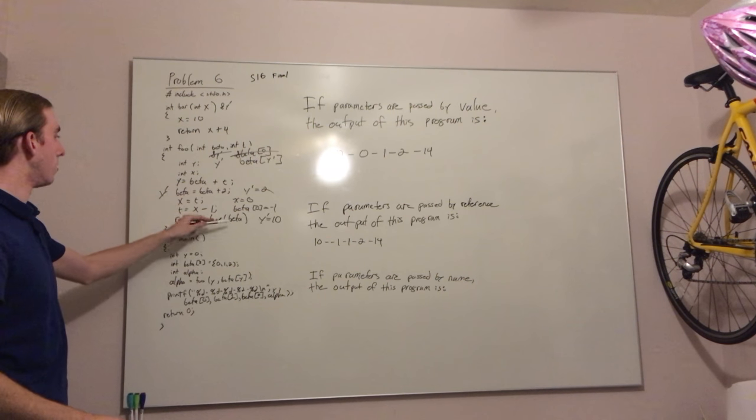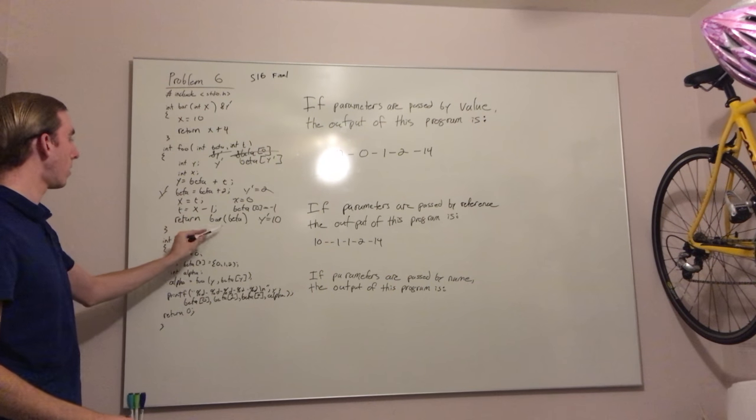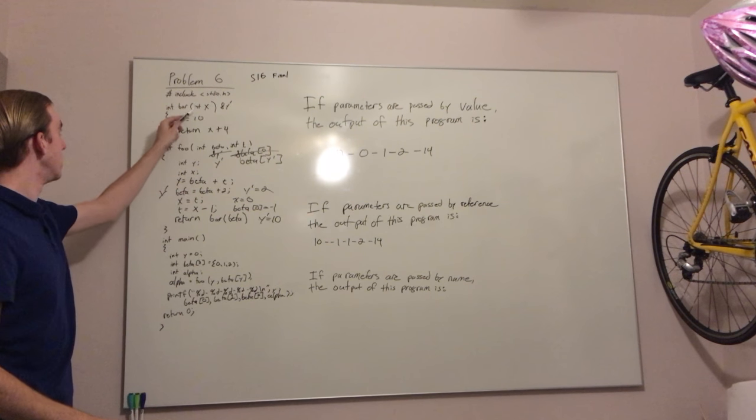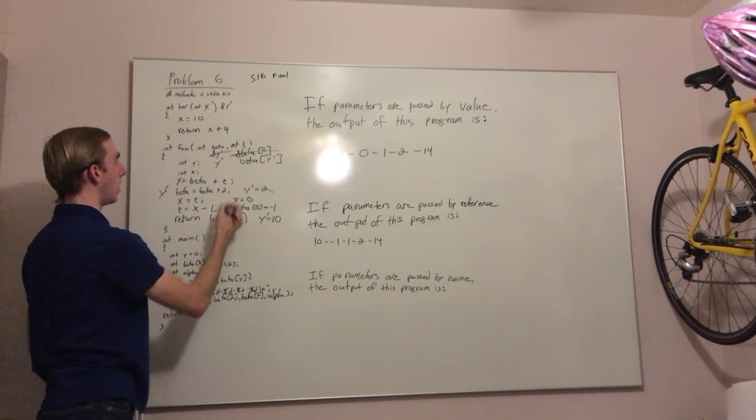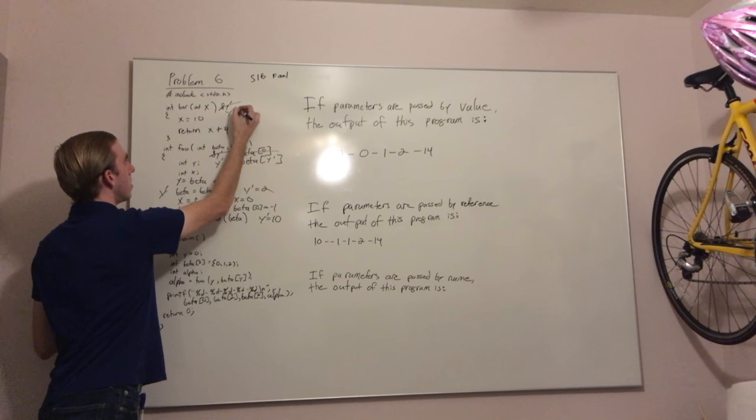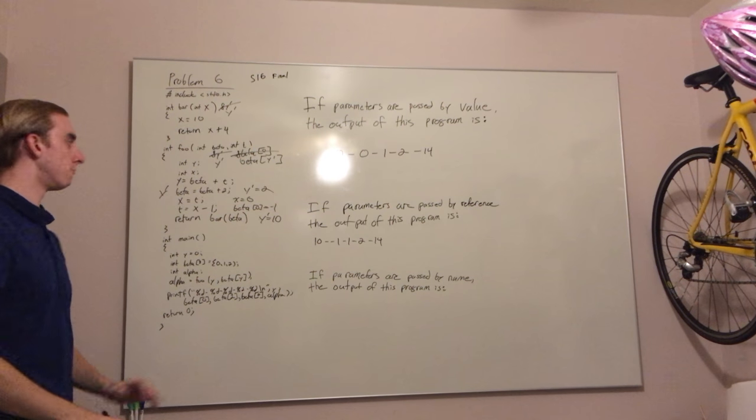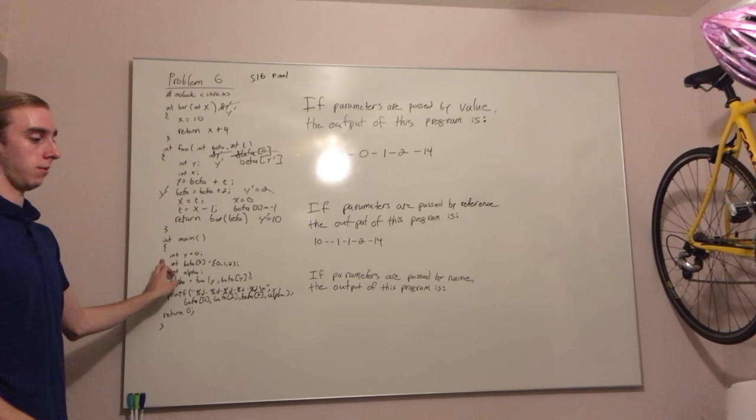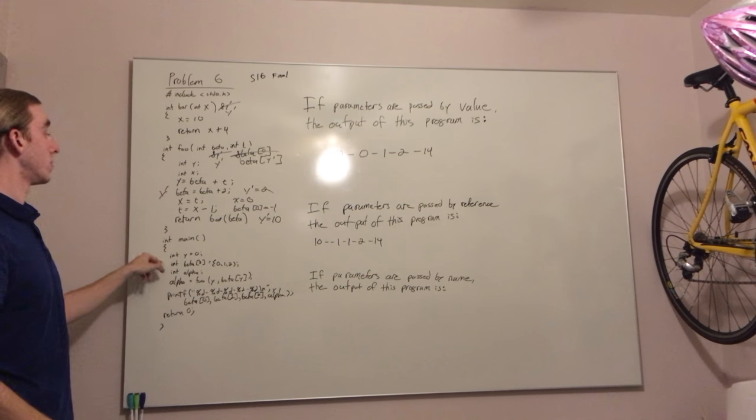Likewise, what we call beta here, call bar here on beta, this just becomes y prime. We are changing the original variables here, not just what was passed in.